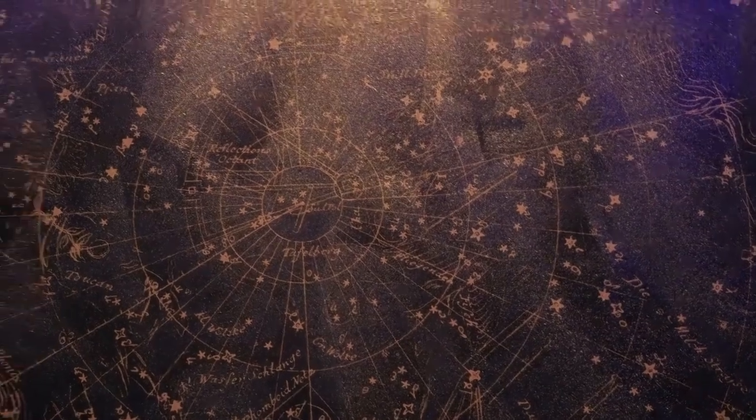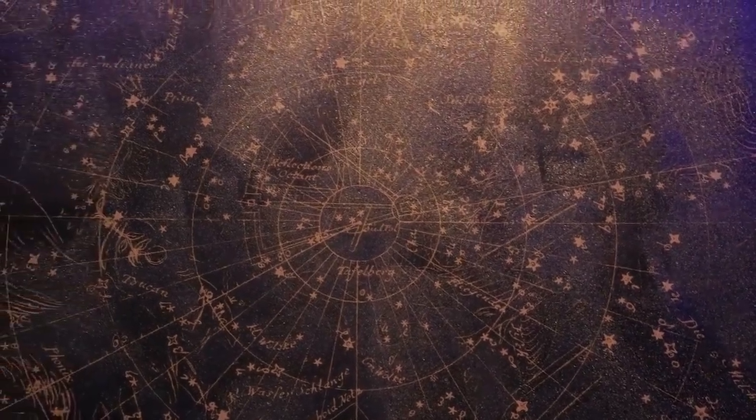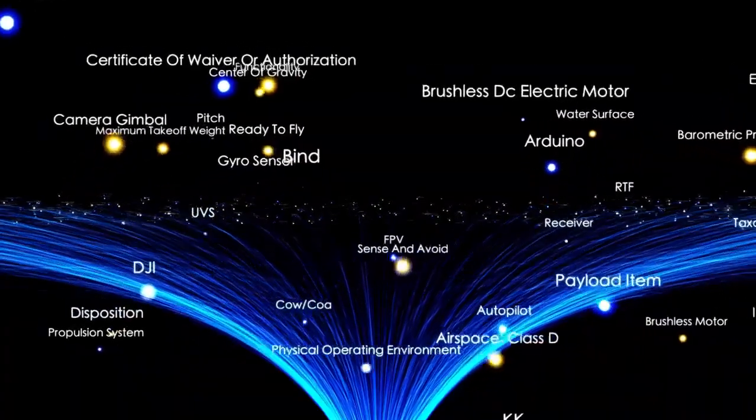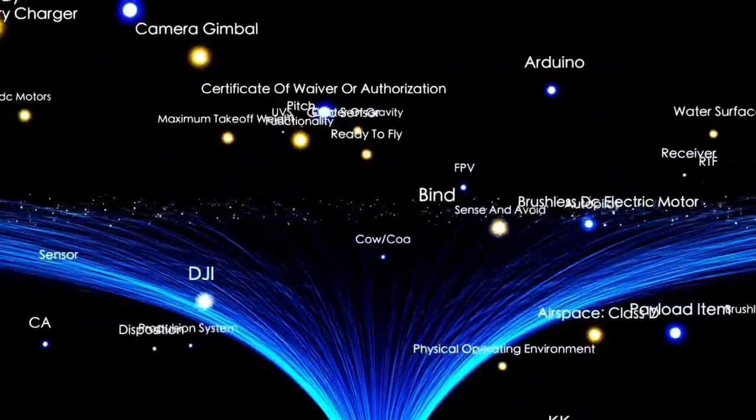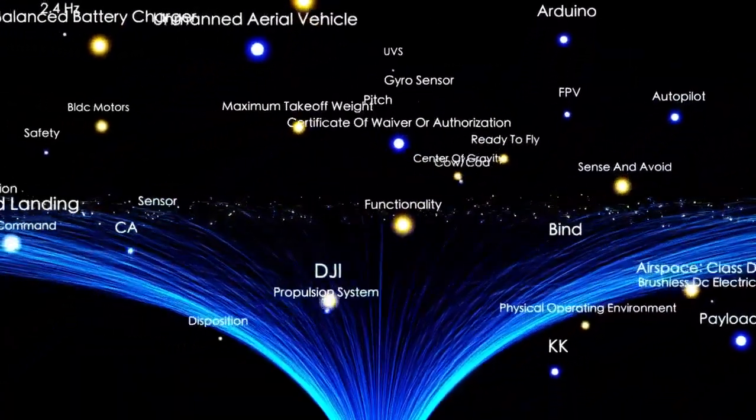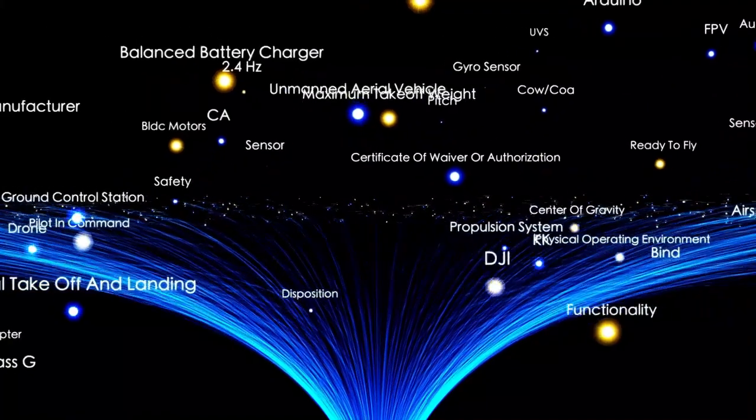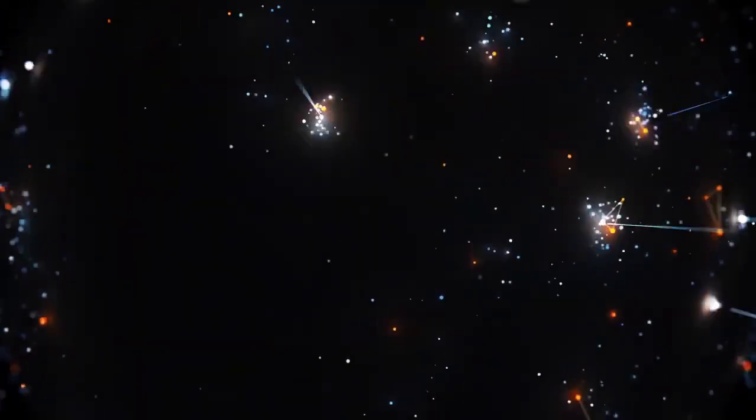Next, we encounter the captivating Centaurus constellation, known for its striking asterism, the Southern Cross. Within Centaurus lies Alpha Centauri, a triple star system comprising Alpha Centauri A, Alpha Centauri B, and Proxima Centauri.